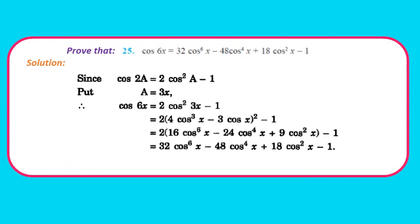Question 25: Prove cos6x = 32cos⁶x − 48cos⁴x + 18cos²x − 1. Using cos2A = 2cos²A − 1 with A = 3x: cos6x = 2cos²3x − 1. Then applying cos3θ = 4cos³θ − 3cosθ: cos6x = 2(4cos³x − 3cosx)² − 1. Expanding (a−b)²: 2(16cos⁶x − 24cos⁴x + 9cos²x) − 1 = 32cos⁶x − 48cos⁴x + 18cos²x − 1. Hence proved. Pause and note down the solution.